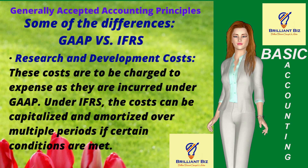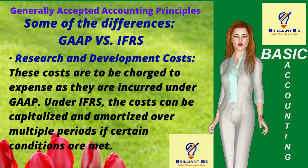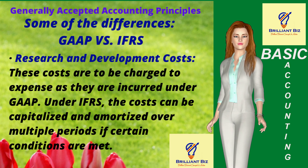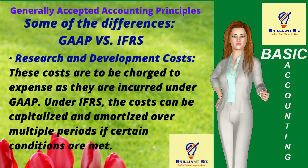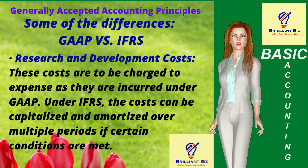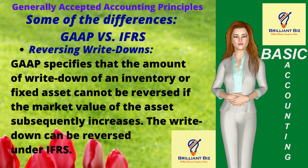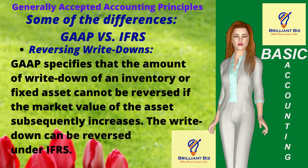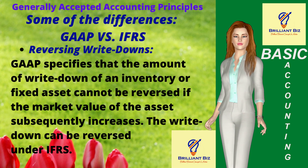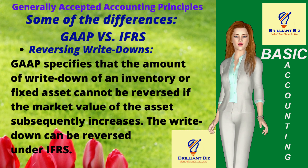No. 2: Research and Development Costs — these costs are to be charged to expense as they are incurred under GAAP. Under IFRS, the costs can be capitalized and amortized over multiple periods if certain conditions are met. No. 3: Reversing Write-Downs — GAAP specifies that the amount of write-down of an inventory or fixed asset cannot be reversed if the market value of the asset subsequently increases. The write-down can be reversed under IFRS.